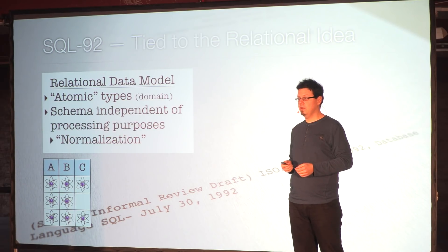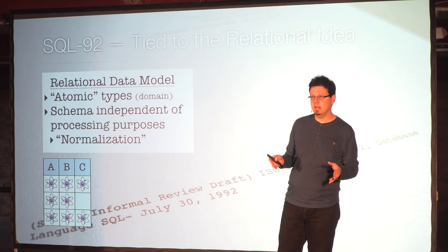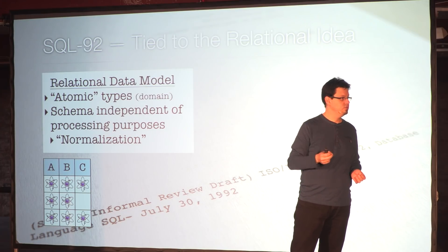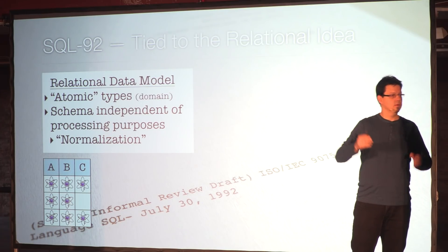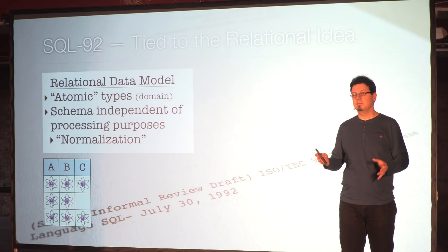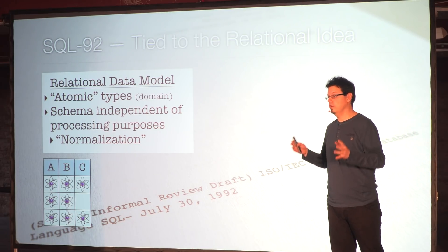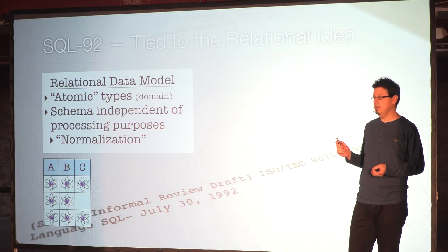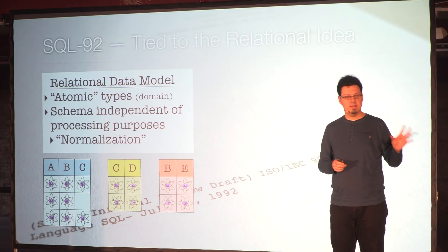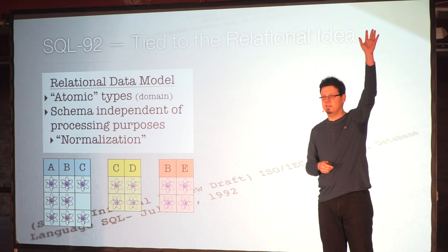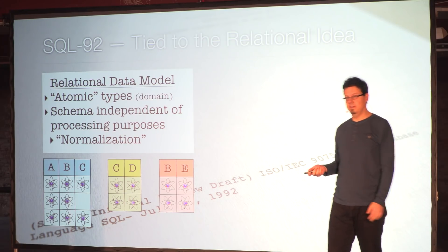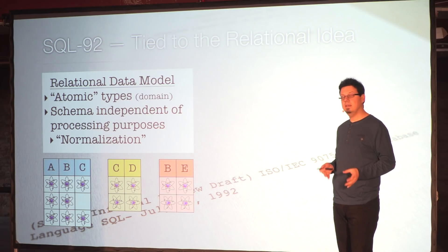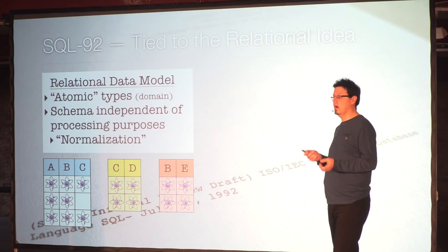The second part of this relational data model is that the schema itself should be designed independent of what you plan to do with the data. That's very crucial. It should be normalized away from what you want to do with the data, because quite often you don't know yet what you're going to do with the data. If you're following these two rules, then you end up with a schema design where you have your data spread across many tables. And quite often, even for a single business requirement, you need data stored in different tables. And that is awkward.